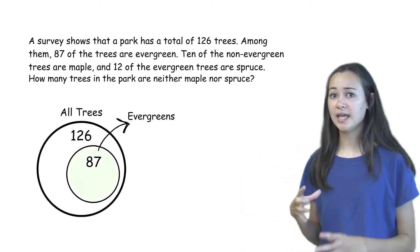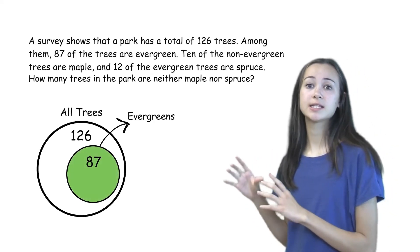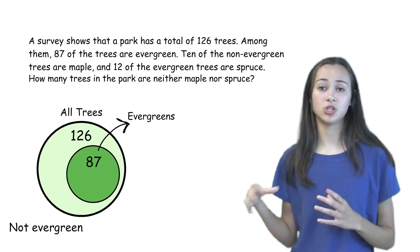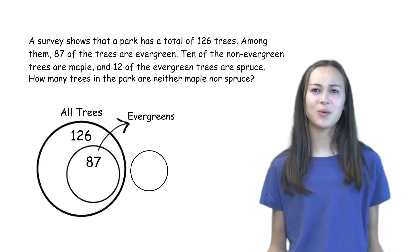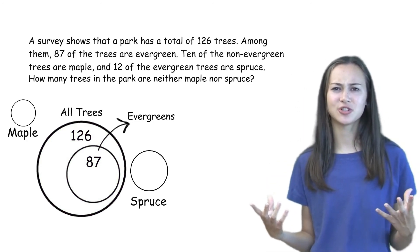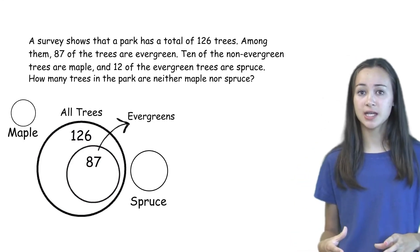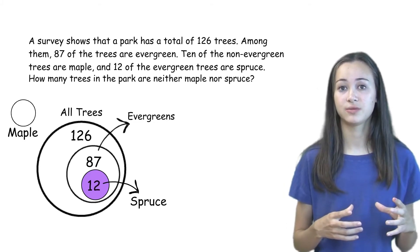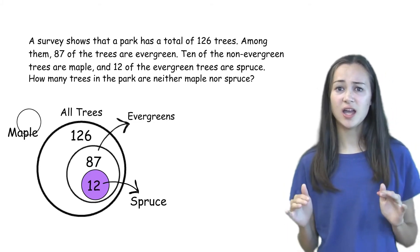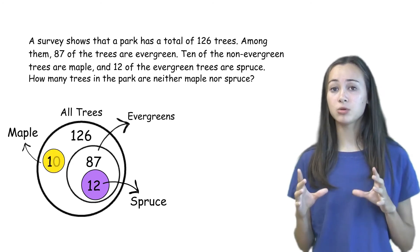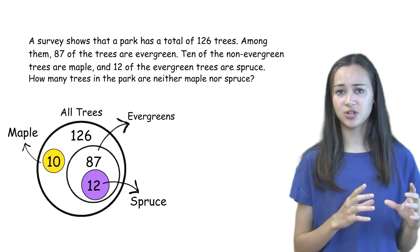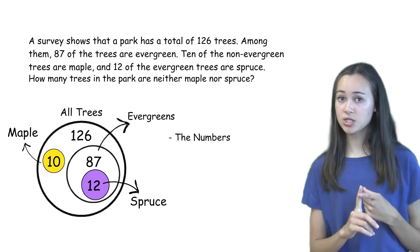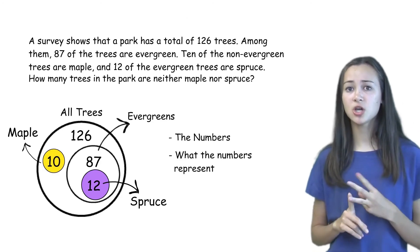The area inside the small circle represents the evergreen trees, and the area outside the small circle represents the trees that are not evergreen. Now, where do we put the spruce circle and the maple circle? Since spruce is a part of the evergreens, we put that circle inside the evergreen circle. And since maple is not an evergreen tree, we put the maple circle outside the evergreen circle. This picture not only represents the numbers and what the numbers represent, but it also shows their relationships.